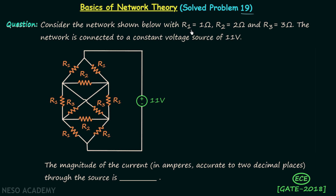Consider the network shown below with R1 equal to 1 ohm, R2 equal to 2 ohms, and R3 equal to 3 ohms. The network is connected to a constant voltage source of 11 volts. We are required to calculate the magnitude of the current in amperes, accurate to two decimal places, through the source. Let's say the current is I.